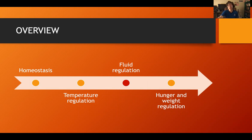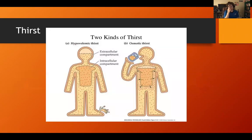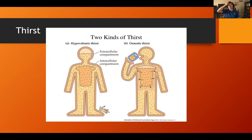We're going to start with fluid regulation — your blood volume, salt concentration, and thirst. We actually have two kinds of thirst. The most common one is osmotic thirst, which isn't based on an exact number of water or salt you need. It's more about the ratio. When you eat something too salty, the water in your body becomes too salty, so you drink more water to dilute that concentration. That's what osmotic thirst motivates us to do.